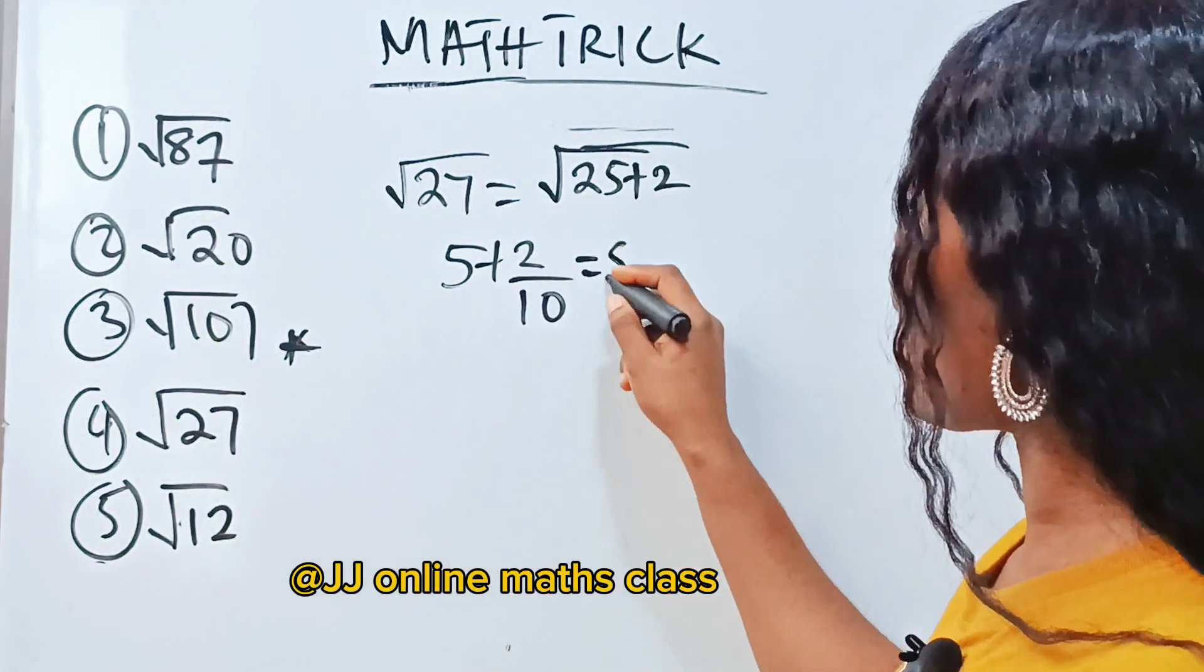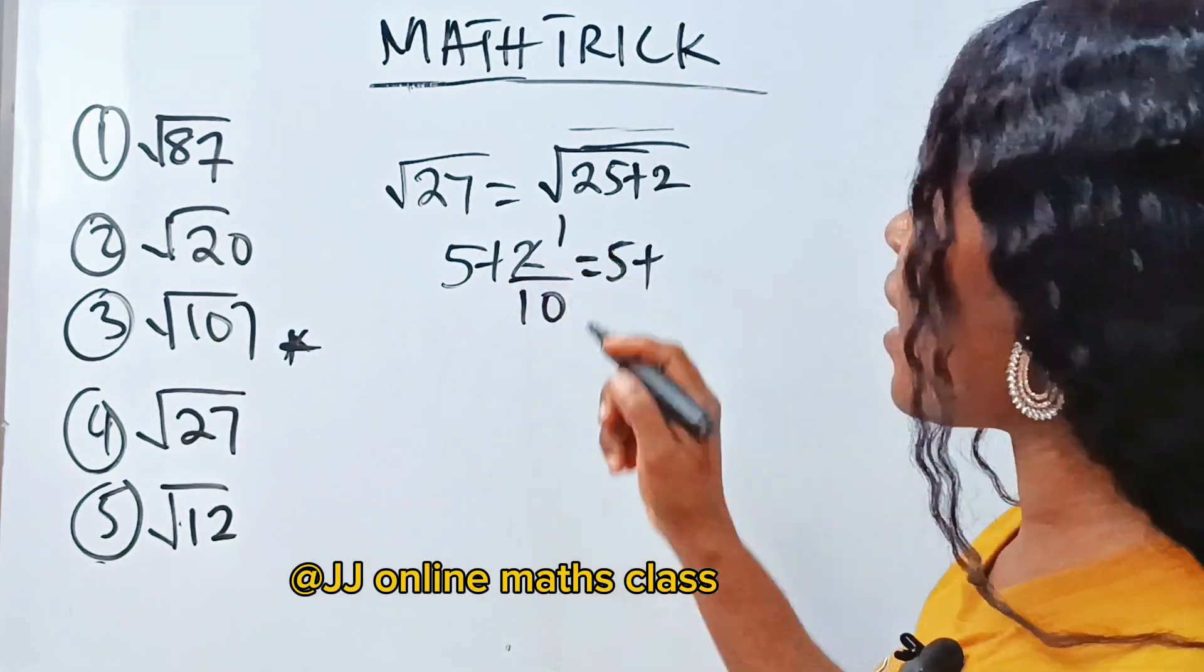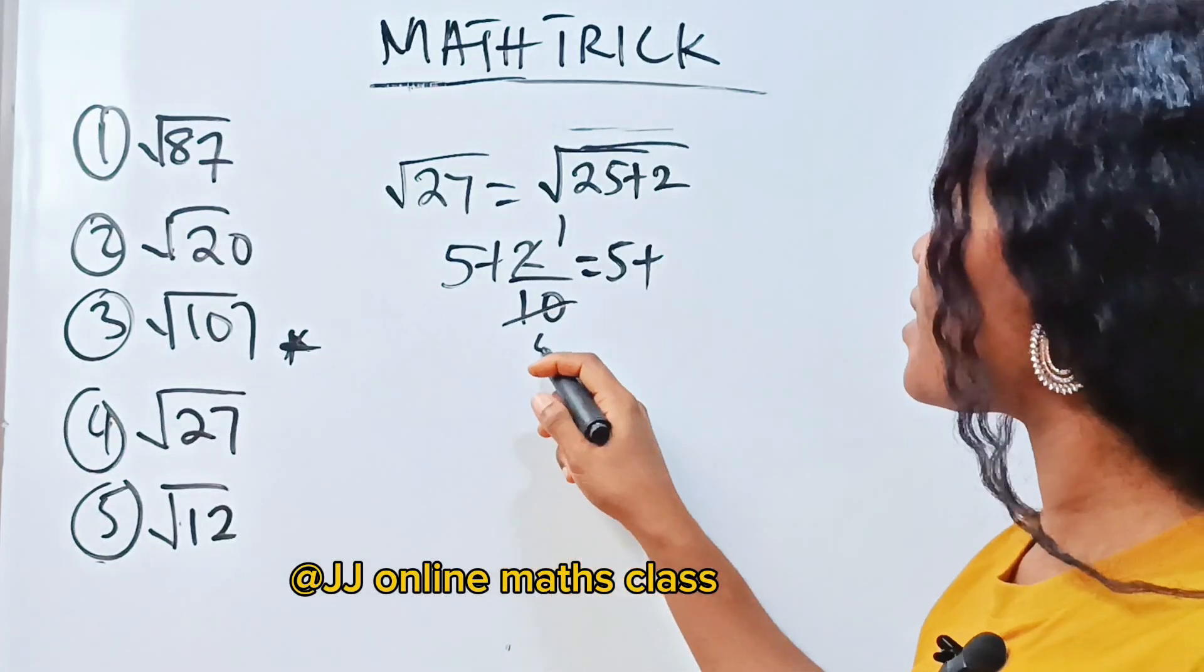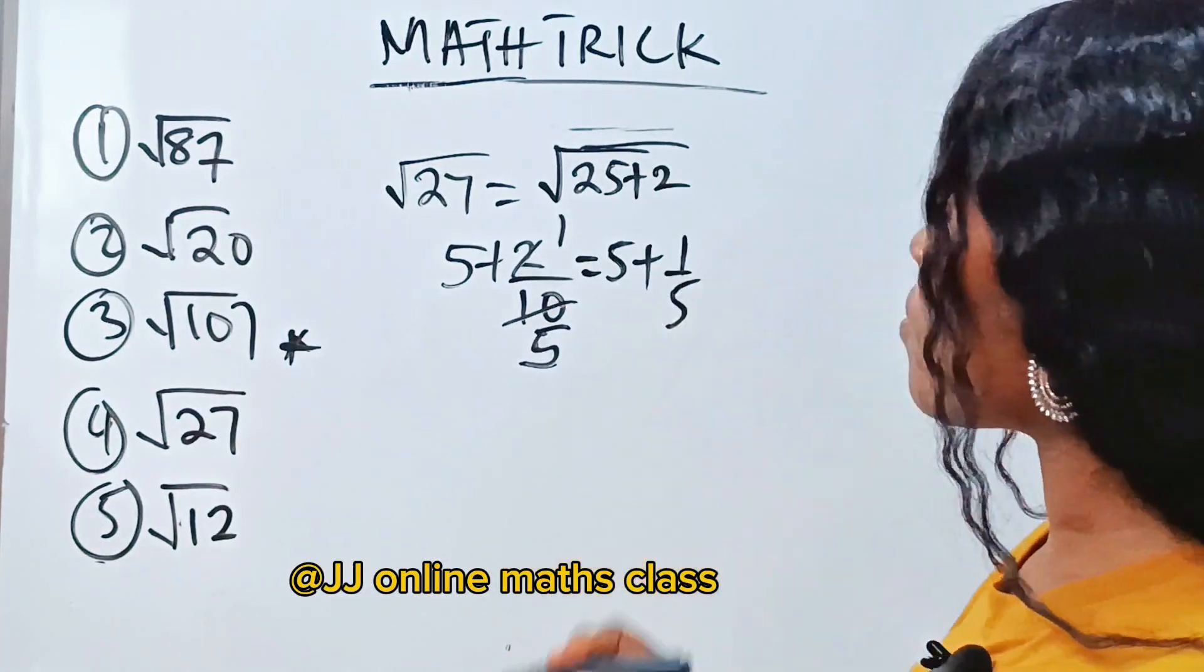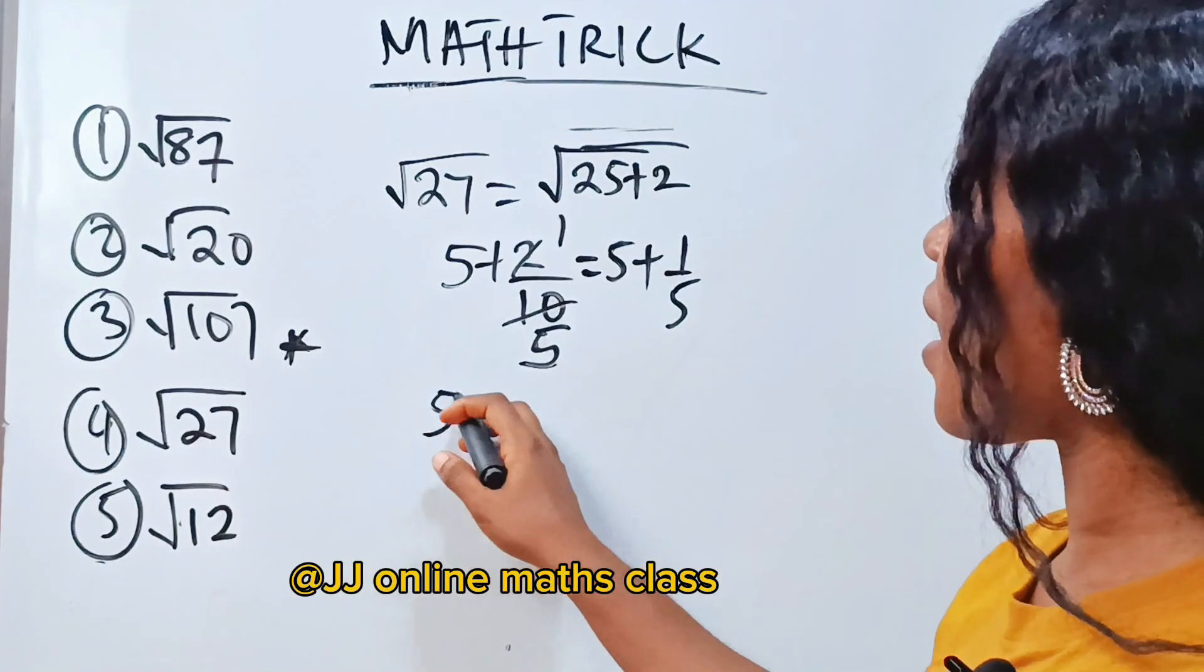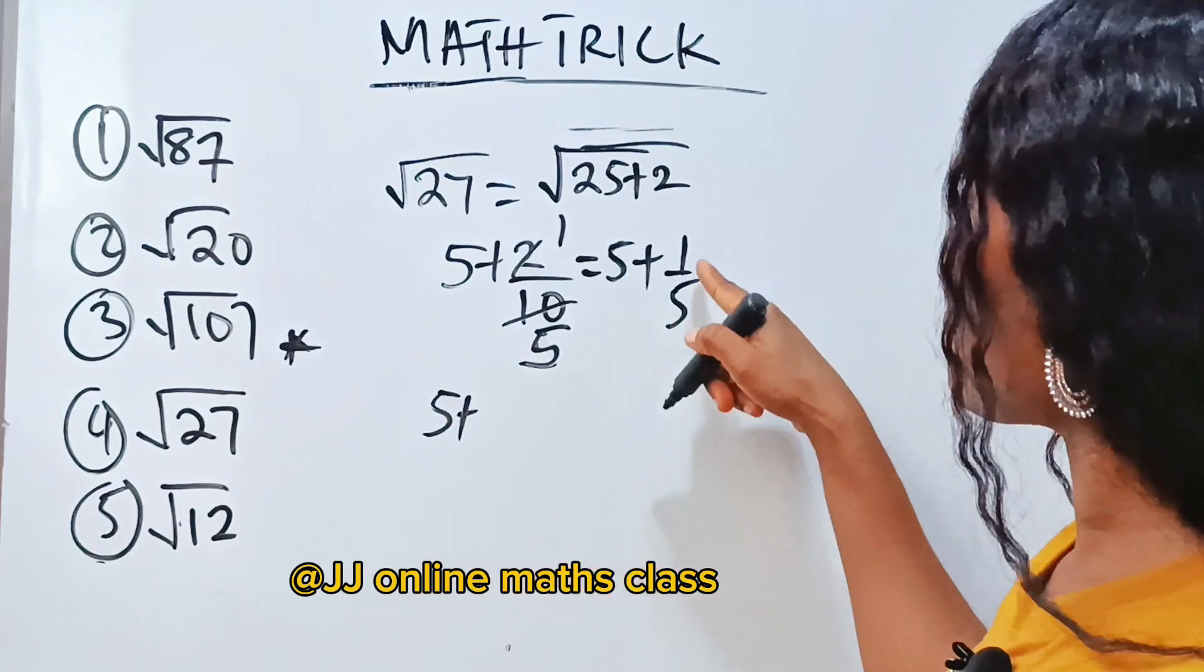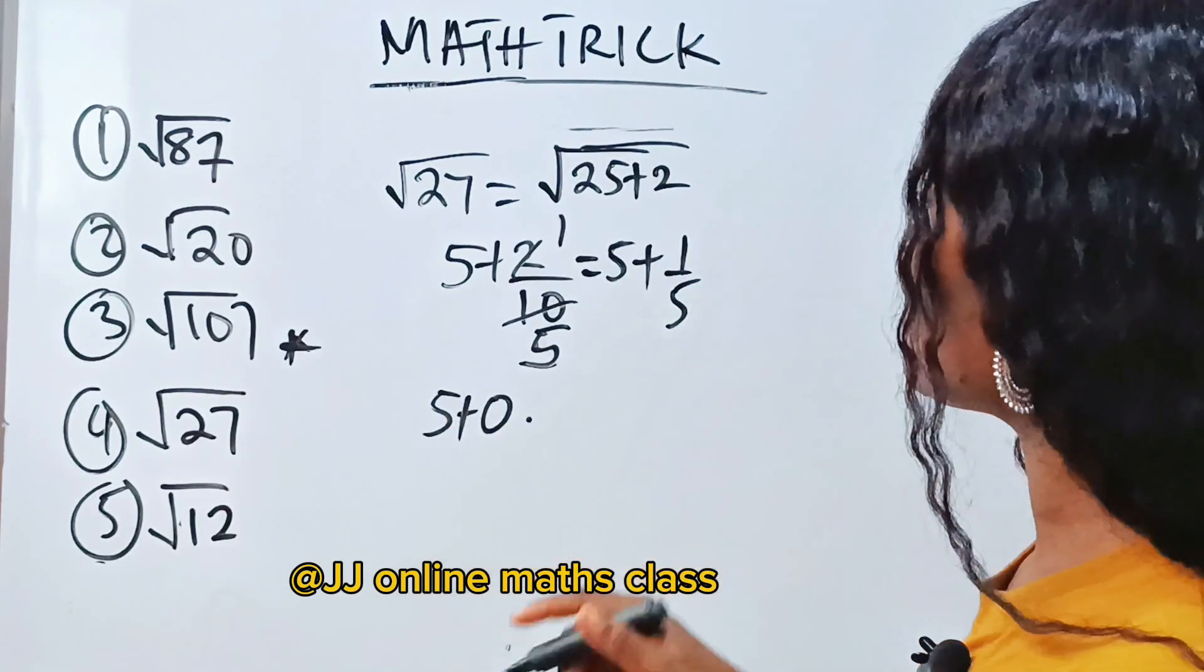All right, now we have 5 plus 2 divide itself is 1. If you divide 10, you have what? 5. So we have 1 over 5. So this should be 5 plus... When 5 divides 1, you have 0 points. If you divide 10 you have 2.